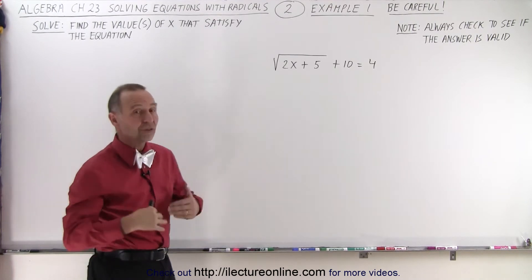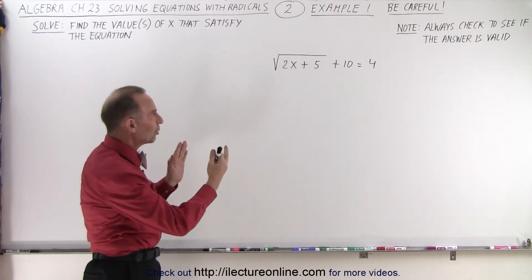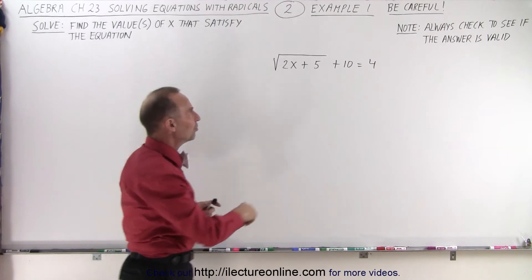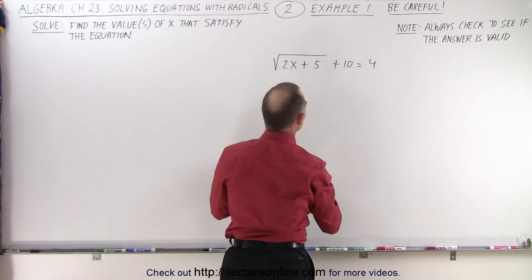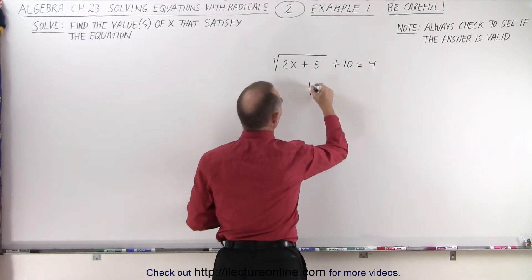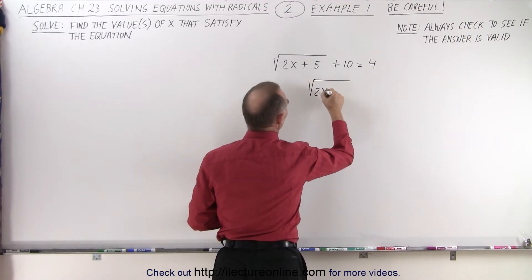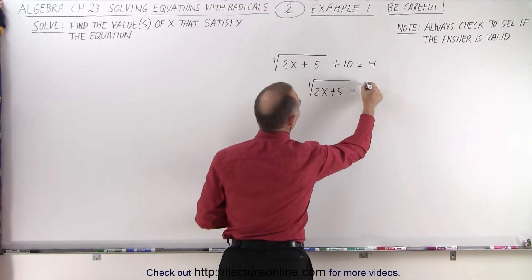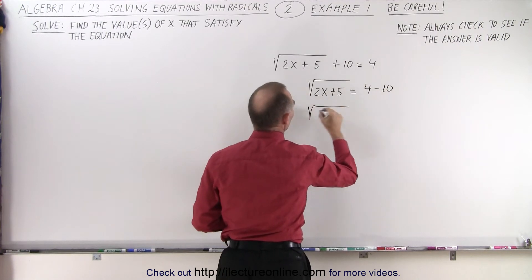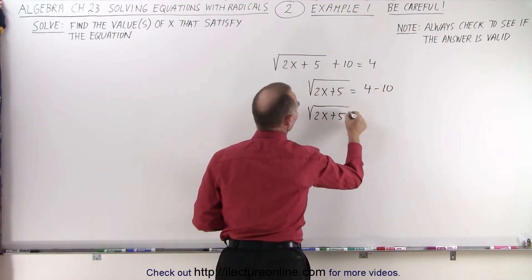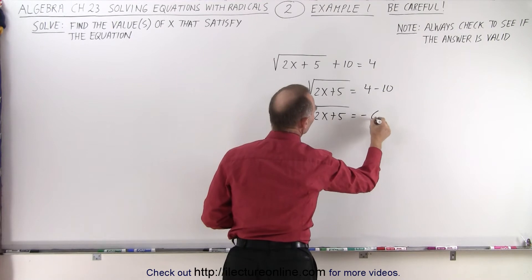So what we want to do is follow our standard procedure. We want to separate all the radicals from everything else, which means the 10 will go to the right side of the equation. So we end up with the square root of 2x plus 5 is equal to 4 minus 10, or the square root of 2x plus 5 is equal to minus 6.